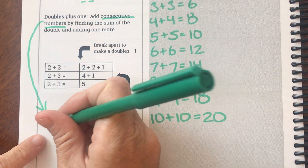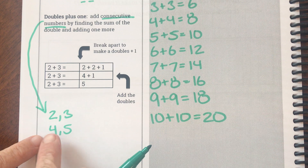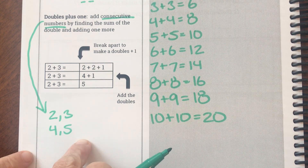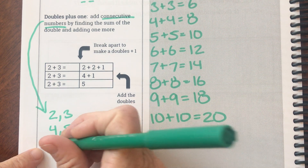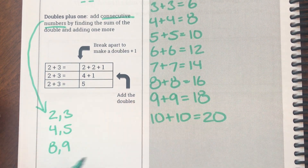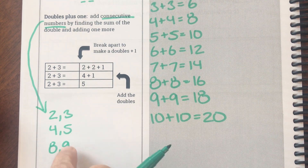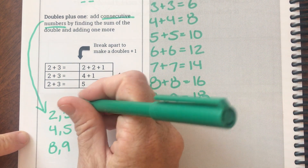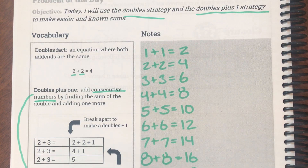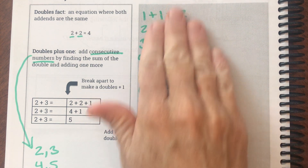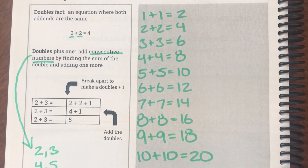Another consecutive pair could be four and five, because four and five when you count are next to each other. Another consecutive pair could be eight and nine — one, two, three, four, five, six, seven, eight, nine — they're next to each other. That's what they mean by consecutive numbers. Now if you weren't able to copy all this down, you might want to, because you could use this to help you in the next few lessons.